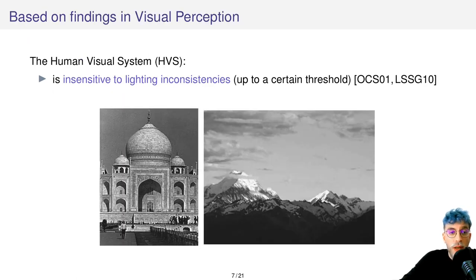Before going any further we need to understand why we can move the light around in the scene, and this is based on findings in the visual perception community that states that our visual system is rather insensitive to lighting inconsistencies, up to a certain threshold that is.